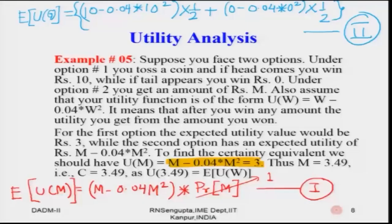If the certainty value is exactly 3.49, the person with this quadratic utility function would be indifferent between the gamble and the sure amount. If the sure amount is reduced to say 3 — less than 3.49 — the person should rationally take the gamble, since the gamble's expected utility is higher.